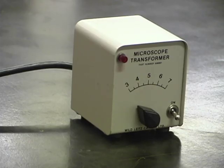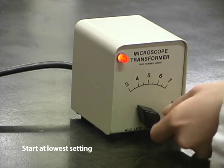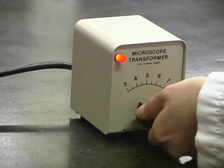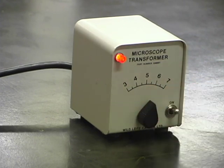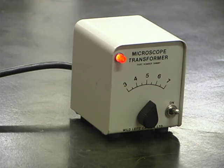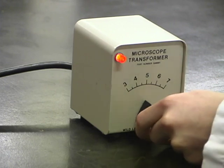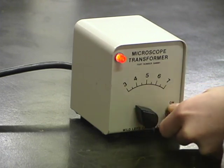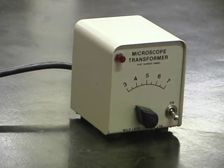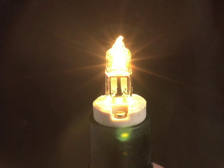You should always start off with the lowest setting and gradually increase it to the point that the object is clearly illuminated and is still comfortable to your eyes. When you are finished using such a microscope lamp, you should turn the transformer to its lowest setting before it is turned off so that the next time it is used, it cannot accidentally be put into a high setting and burn out the light bulb. Microscope light bulbs are expensive.